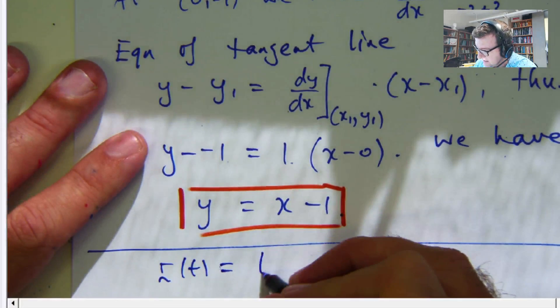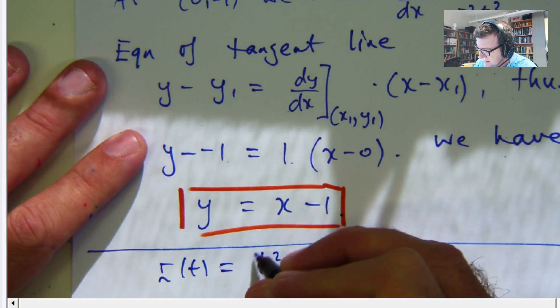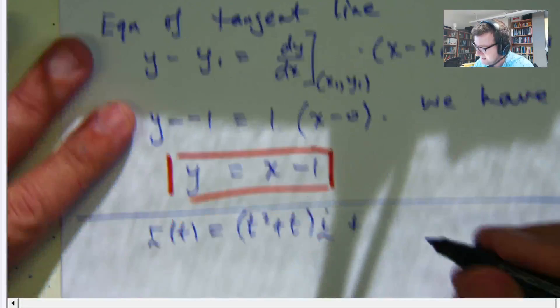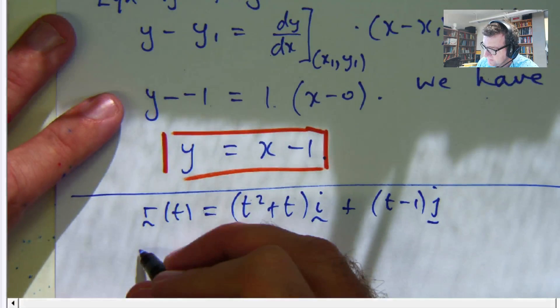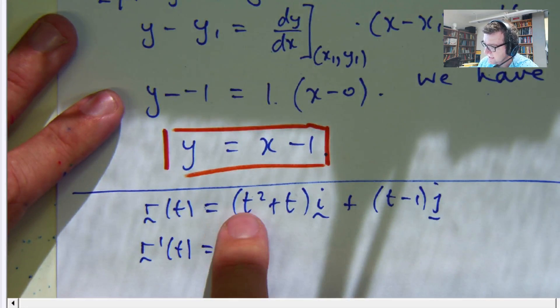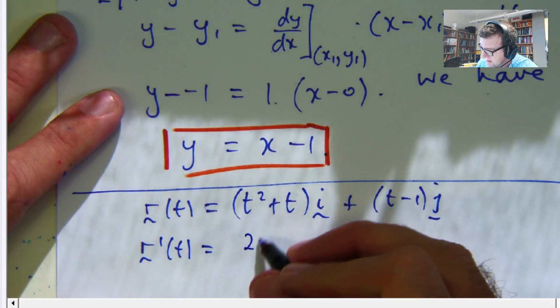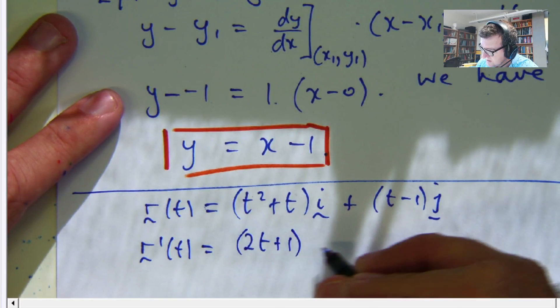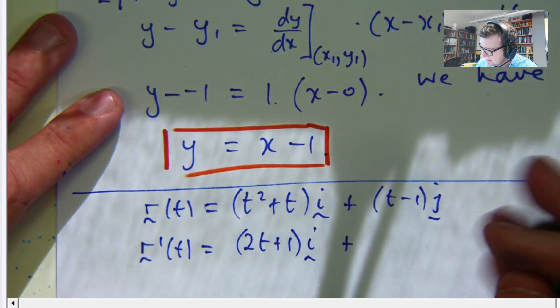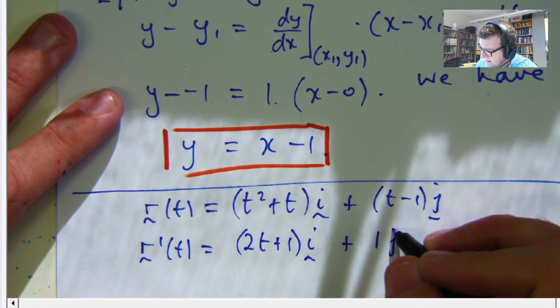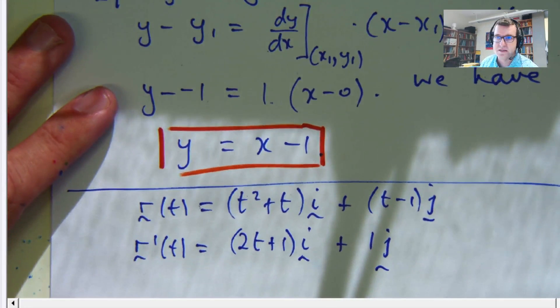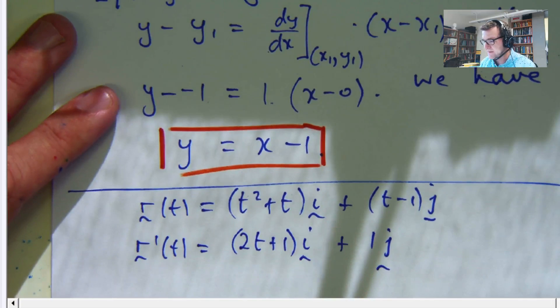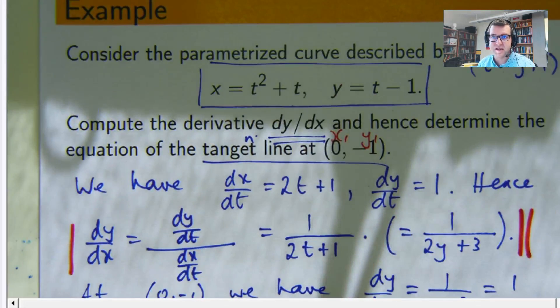it'd be t squared plus t i plus t minus 1 bracket j, the derivative, which is also a vector, would be 2t plus 1 times i plus 1 times j. So you differentiate each of these with respect to t. So here you get a vector. Different from what we're doing up here, but still important.